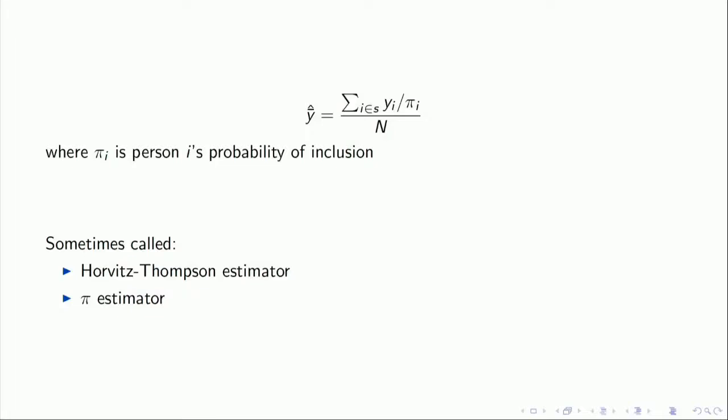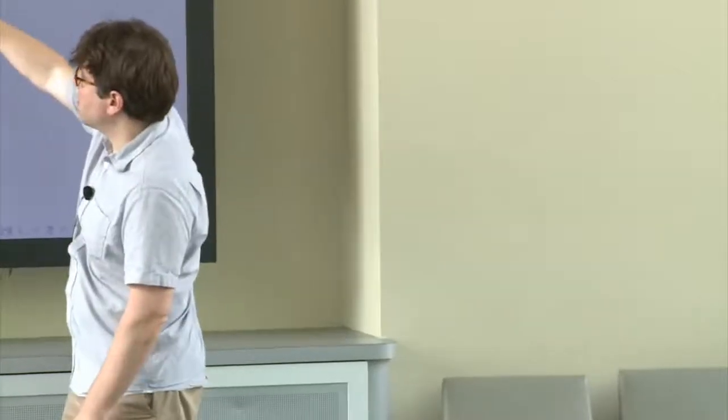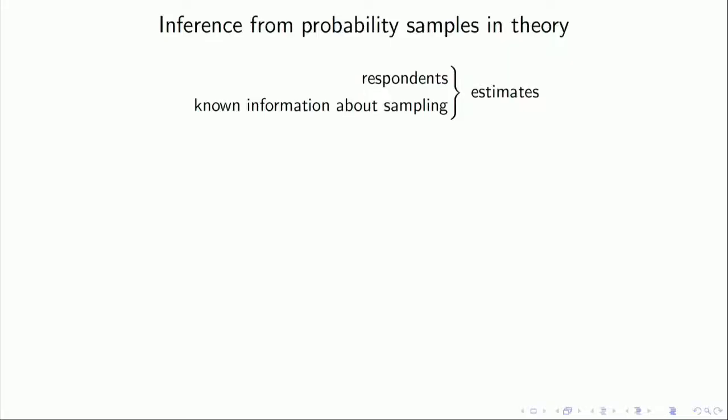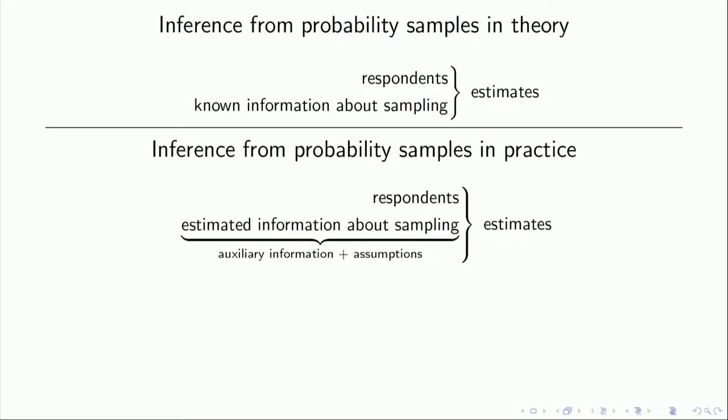We can write this mathematically: for some outcome Y_i, we take everyone in the sample and divide by the probability of inclusion π_i. People with a lower probability of inclusion get more weight. The less likely you are to see someone, the more you should include them in your estimates. This estimator is called the Horvitz-Thompson estimator, or the π estimator. In theory, inference from probability sampling uses the Horvitz-Thompson estimator with known sampling information. In practice, you often have estimated information about sampling due to non-response.